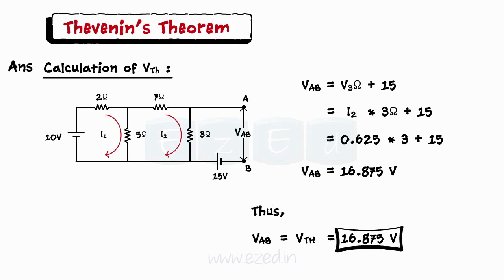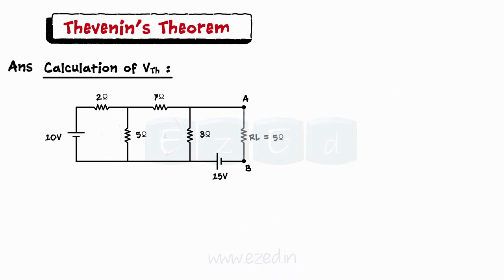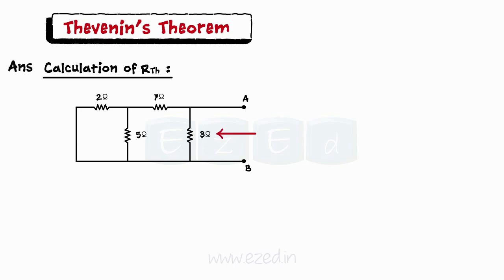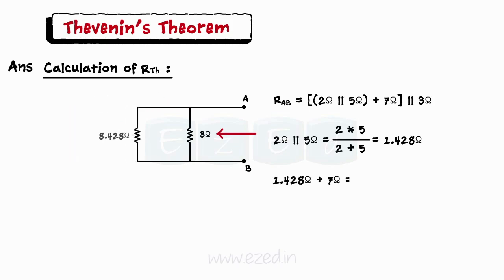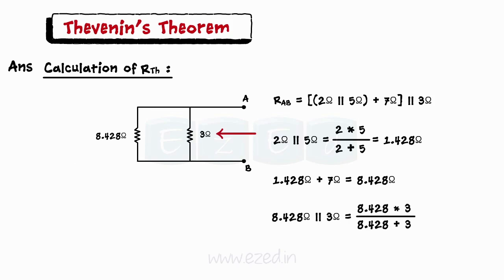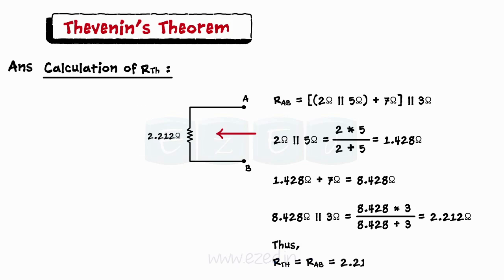The next step is to calculate Rth. To do so, we replace all the sources by their internal resistances, remove the load resistor, and find the equivalent resistance between AB by looking inside the network as shown. Rth is calculated as 2 Ohms and 5 Ohms in parallel, with their equivalent resistance in series with 7 Ohms, and that equivalent again in parallel with 3 Ohms, giving Rth equal to 2.12 Ohms.